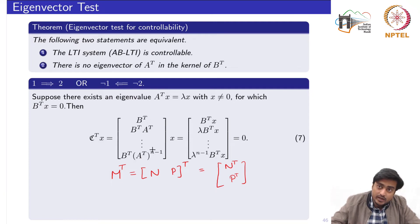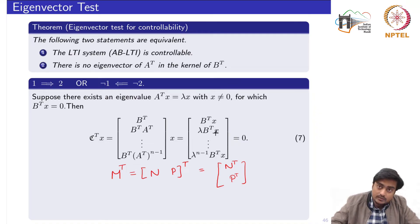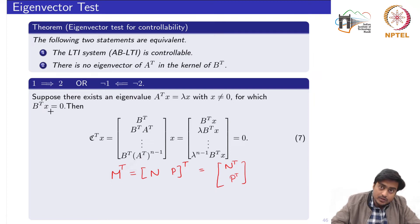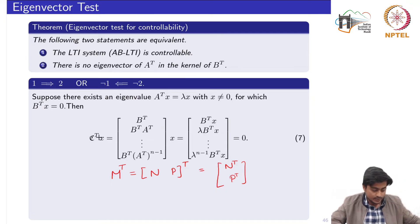Taking x inside the block matrix, the first term is B-transpose times x, the second is B-transpose times A-transpose times x. Since A-transpose x equals lambda x, and lambda is a scalar, we replace A-transpose x by lambda times x, giving lambda times B-transpose x. Similarly, each subsequent term becomes lambda^k times B-transpose x, up to lambda^(n−1) B-transpose x. Since B-transpose x equals 0 by assumption, all terms become zero, so C-transpose x equals 0, meaning x is in the kernel of the controllability matrix transpose.